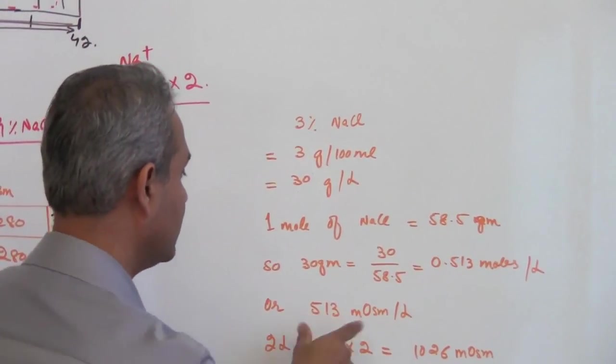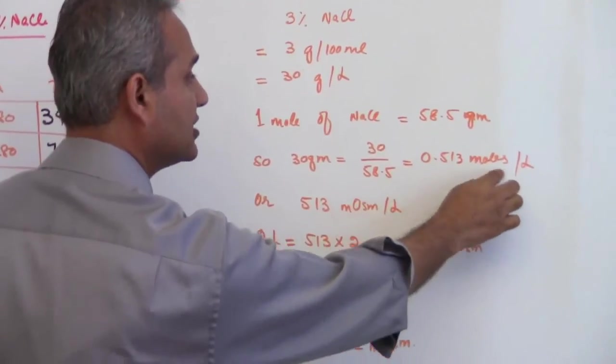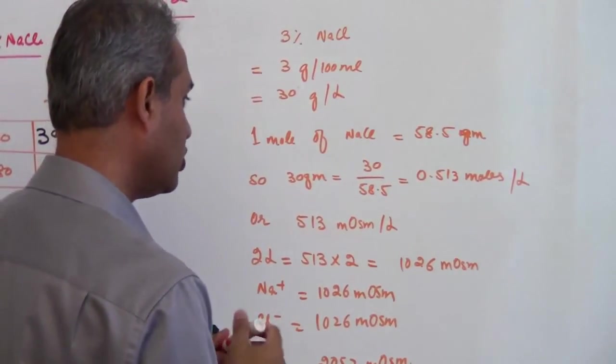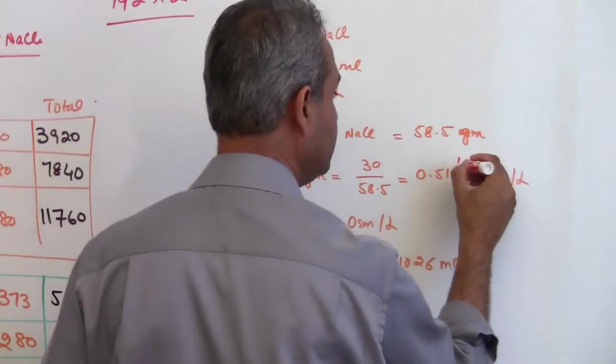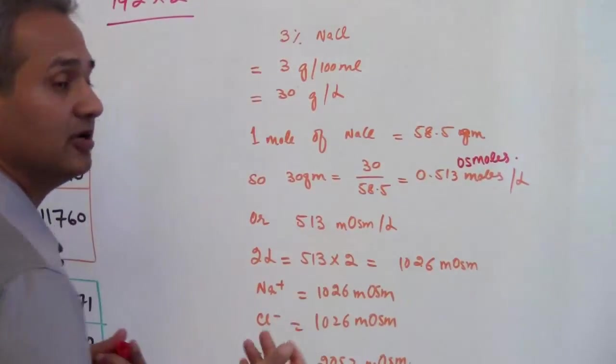This number and this number is the same, the only difference is that here we are saying moles per liter or osmol per liter and here we are saying milliosmol per liter.